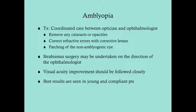The treatment for amblyopia involves coordinated care between an optician and an ophthalmologist. An optician can prescribe corrective lenses or contact lenses — they're prescribing those even in seven- and eight-year-old children. The ophthalmologist can take care of any surgical problems such as cataracts or opacities. In addition to correcting refractive errors, another important treatment is to patch the non-amblyogenic eye — the eye that's seeing properly — leaving the diseased eye open. This forces the amblyogenic eye to do all the work, and by doing that, you increase the neuronal connections to the visual cortex.